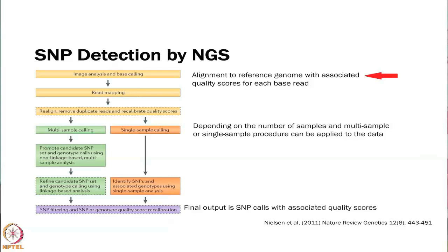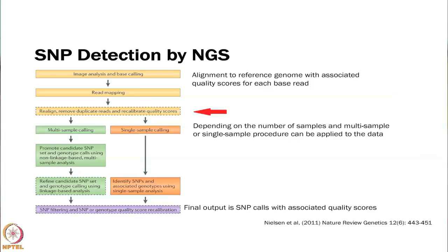Another way to do SNP detection is using whole genome or whole exome sequencing. You align your sequencing data to the reference genome as discussed, and you have those quality scores — Phred scores — for each of the different reads, so you know how confident you are that the base called at a specific location is true. You do a QC step, and then depending on the number of samples you can do multi-sample or single-sample calling. Many algorithms do this, and they output SNP calls in VCF format.